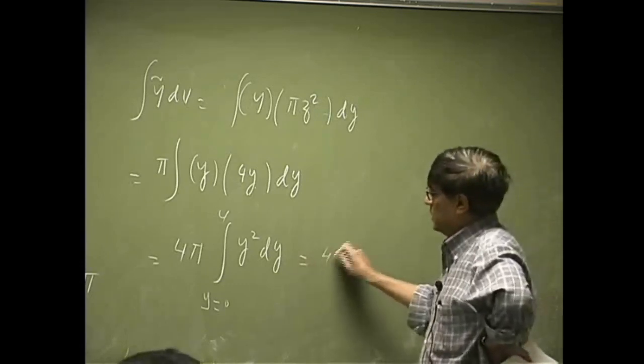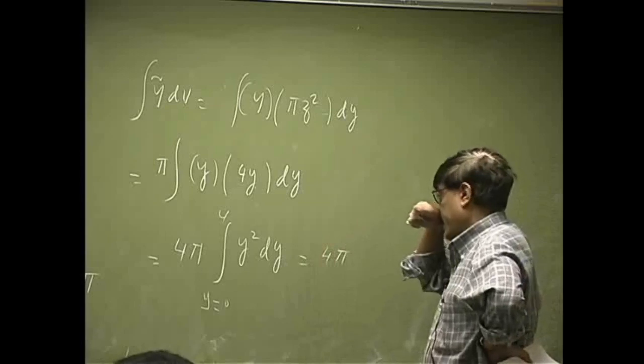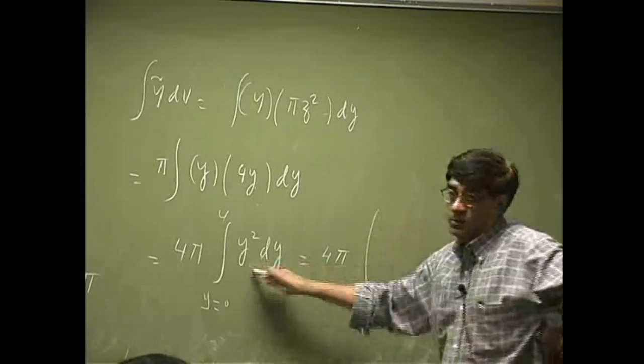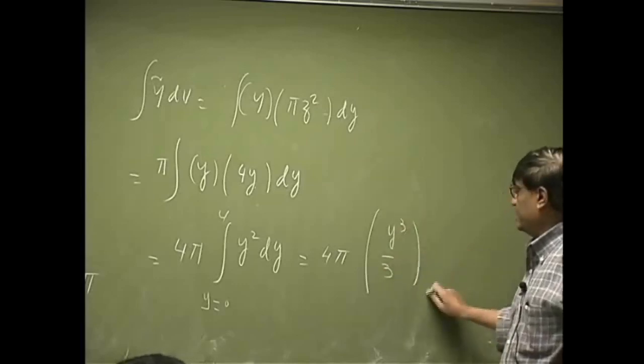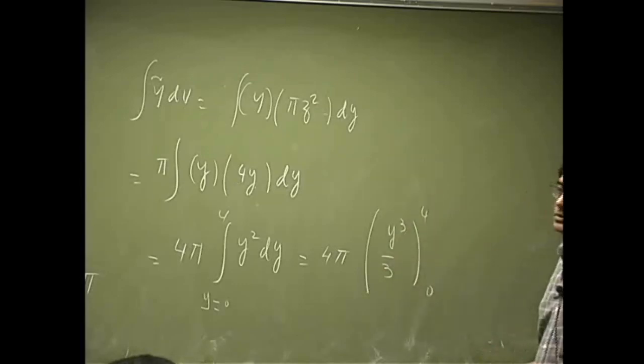So, this will be 4 pi. That's going to be y squared. So, that will be y cubed over 3 between 0 and 4.